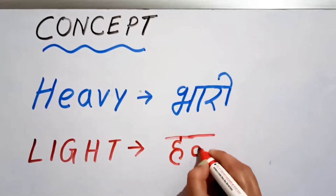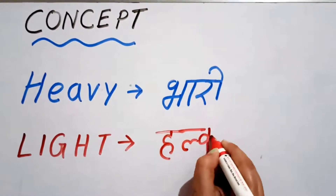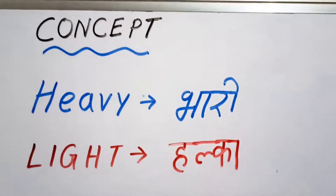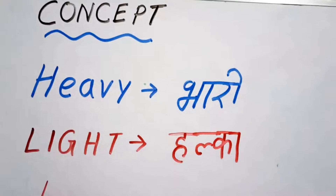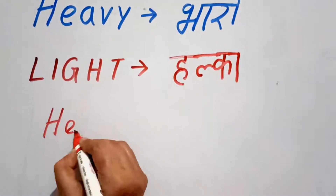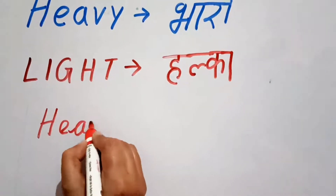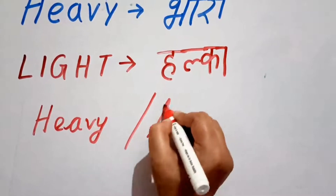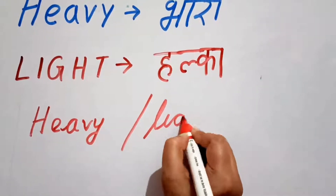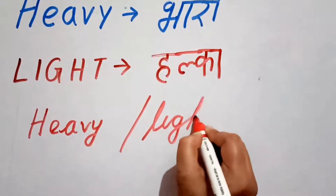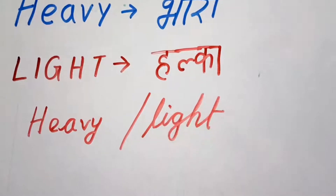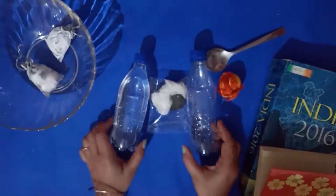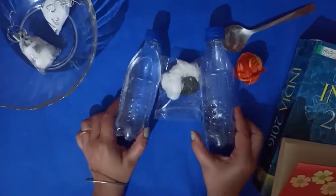These are opposite words. What is the opposite of heavy? The opposite of heavy is light. Now I will explain to you about heavy and light.